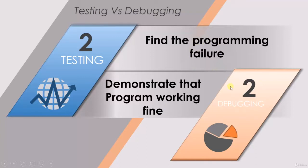If a failure is reported to the debugging team, they will analyze it, fix it, and demonstrate that the program is working fine. So testing is to find the failure, whereas debugging is to demonstrate that there is no failure.